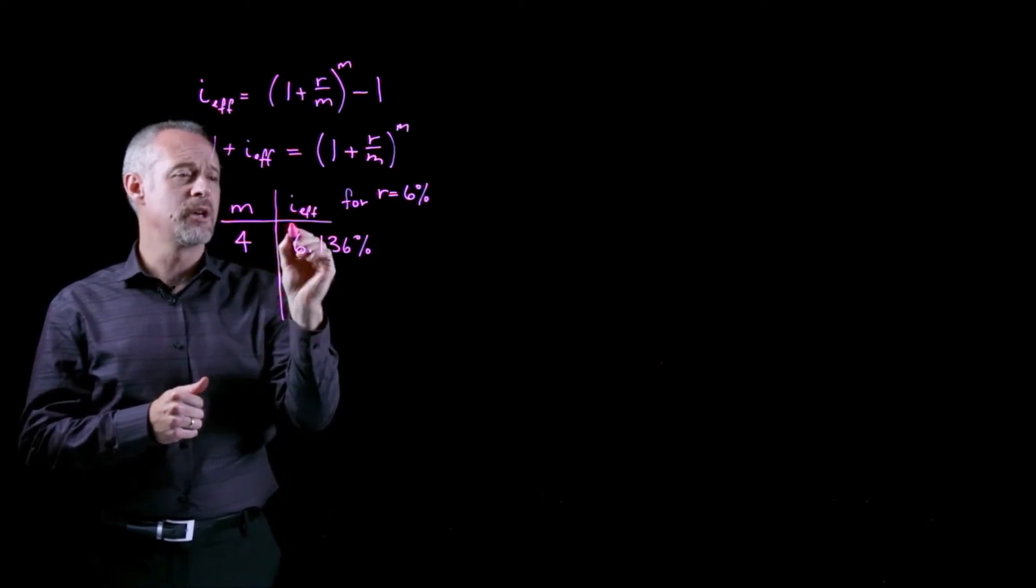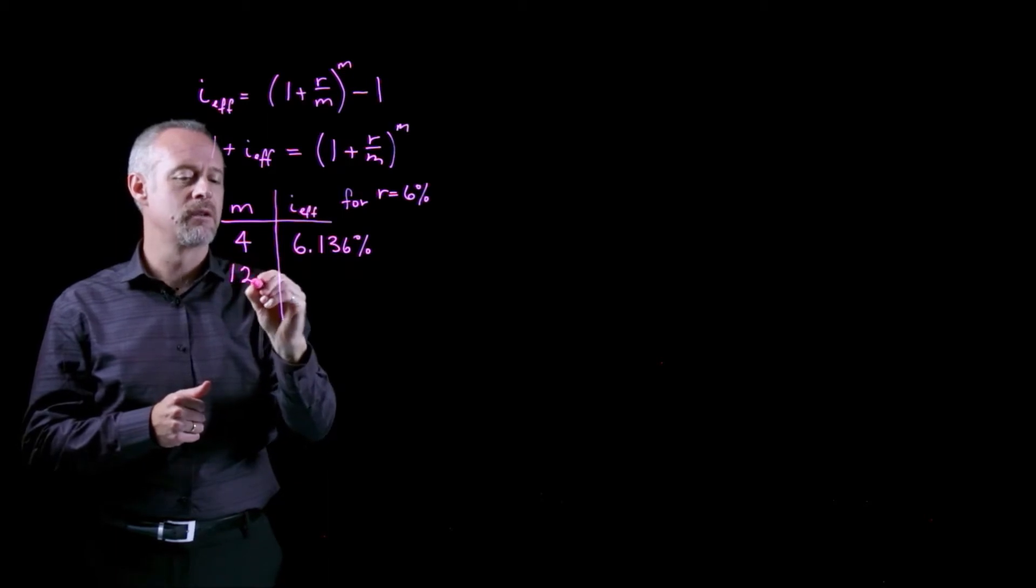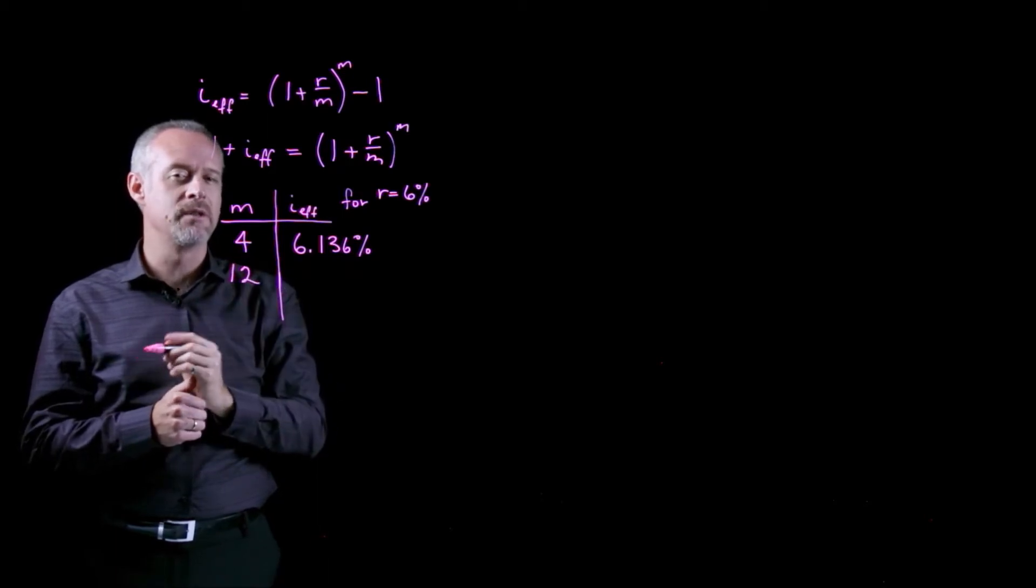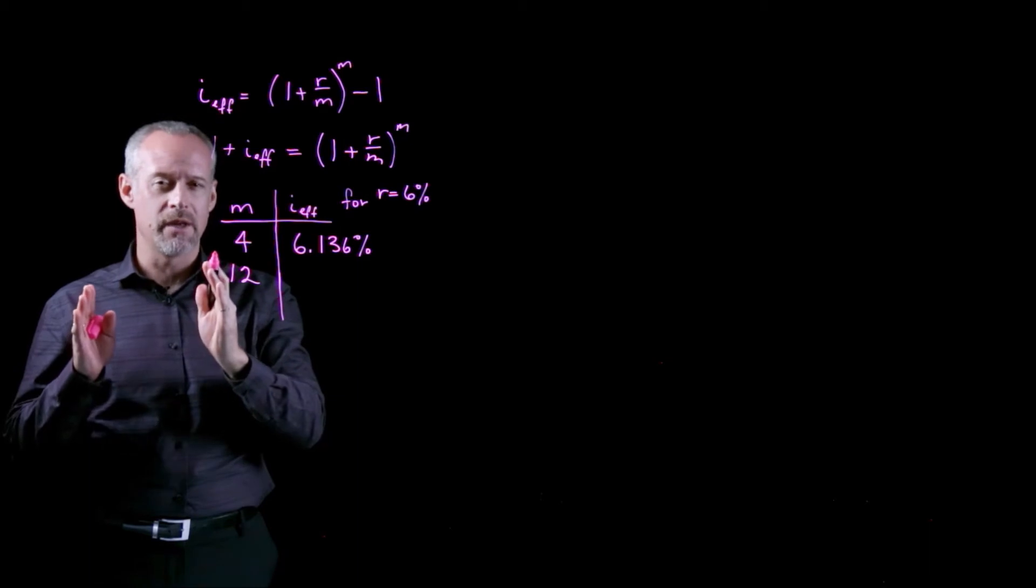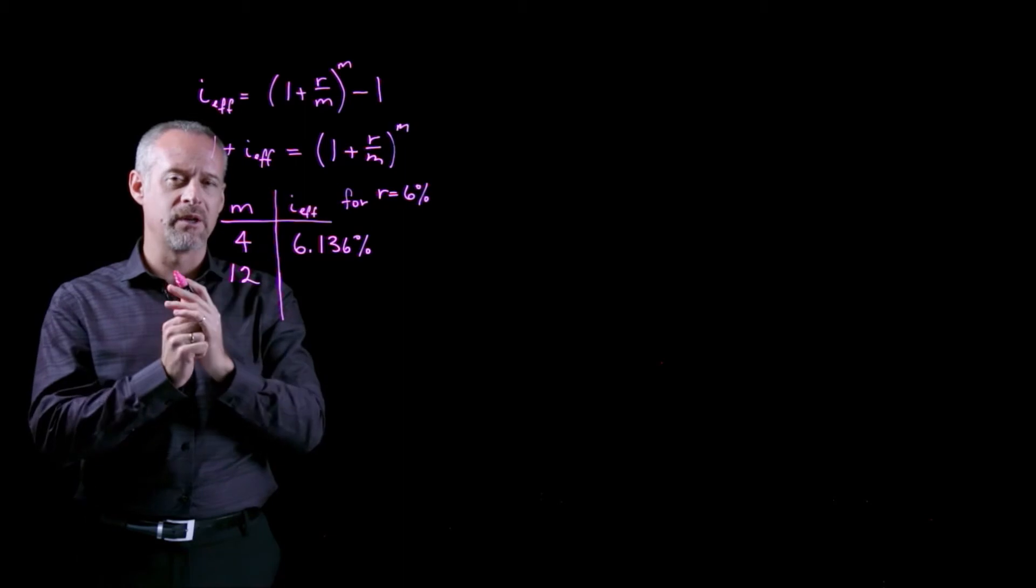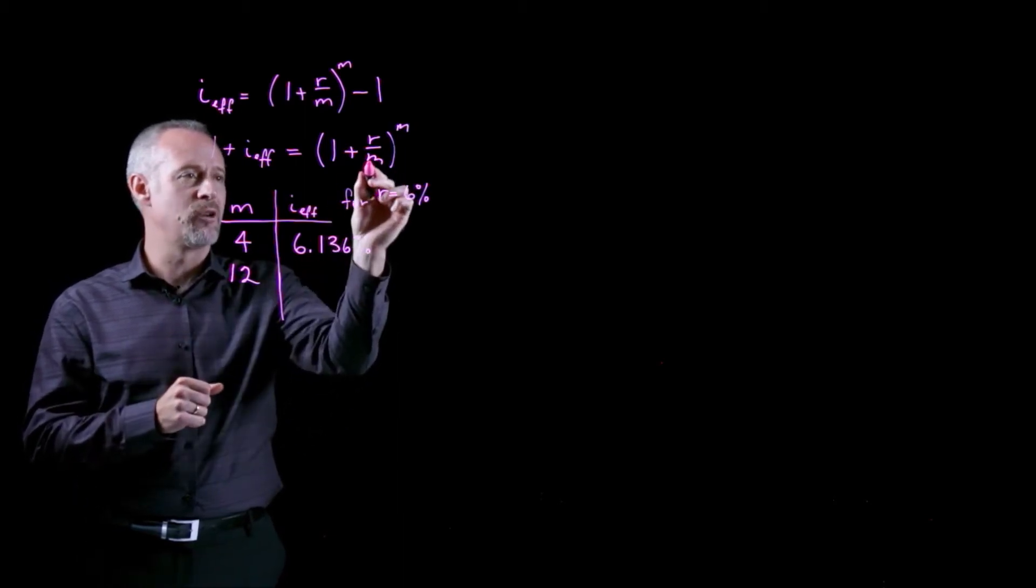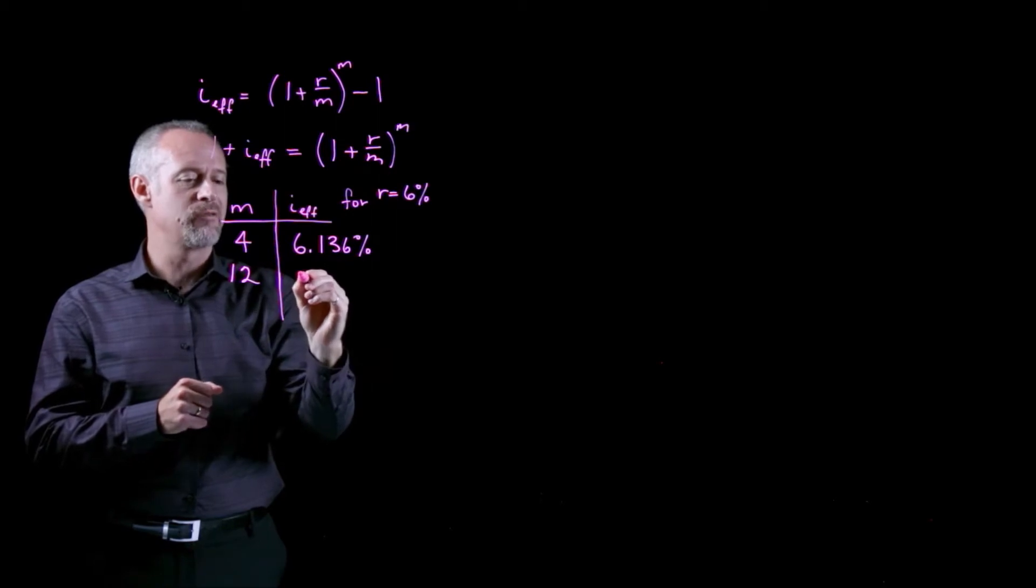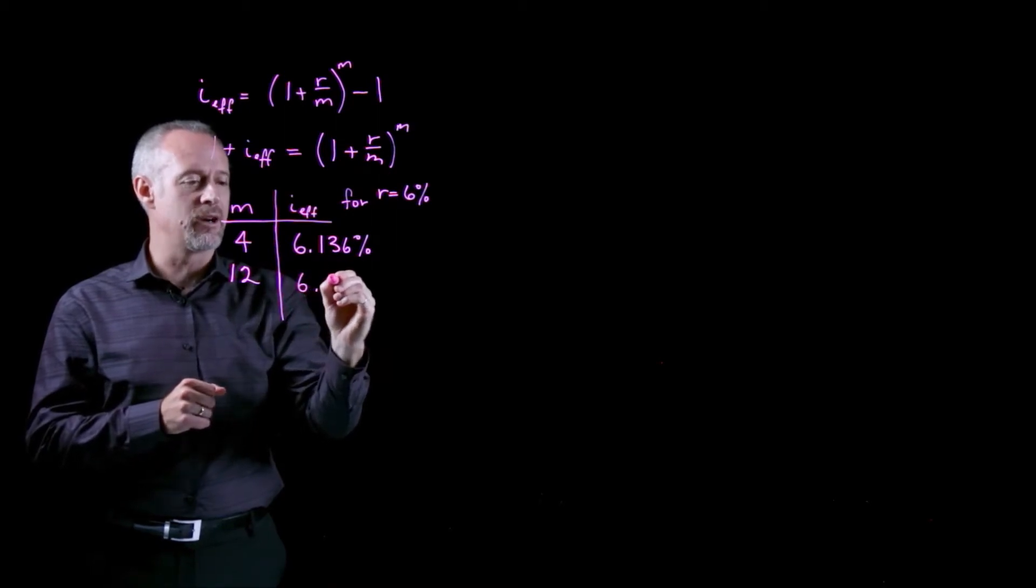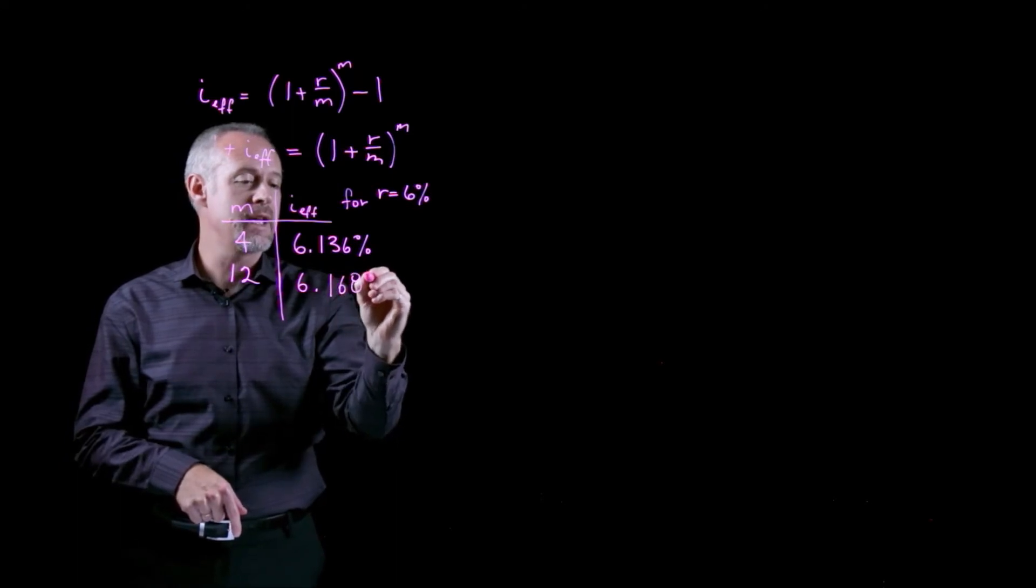If I were to use an interest rate of 6% compounded monthly, my number of compounding periods in the time that the nominal rate is quoted, which is the one year, is 12. I have 12 compounding periods in the one year. My effective interest rate, if I plug 12 in here and 12 in here, becomes a little higher, 6.168%.